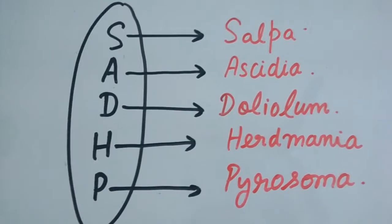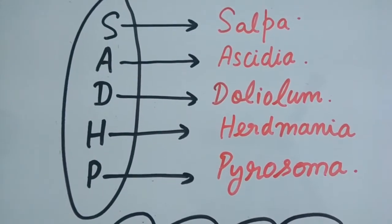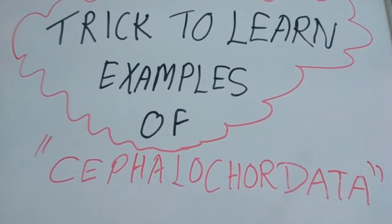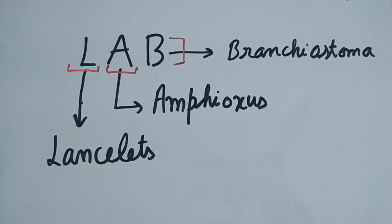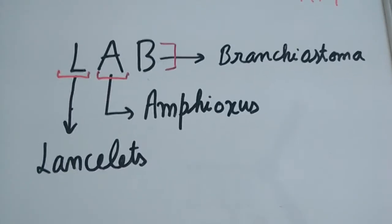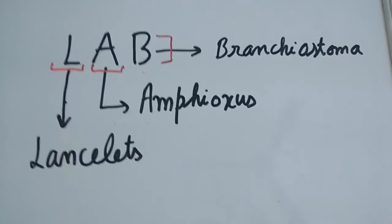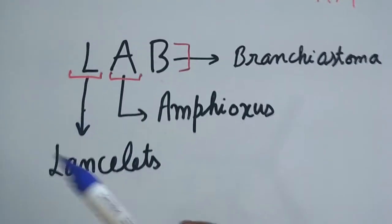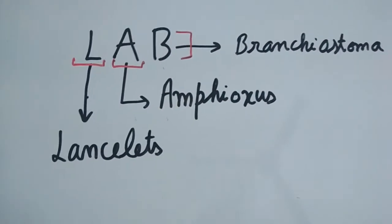Now let's see our next trick. This is the mnemonic to memorize all the examples which are given in NCERT for the phylum Cephalochordata. So you just need to remember LAB and you can relate all the examples.